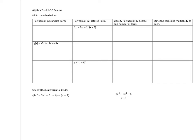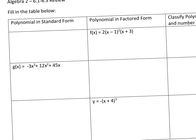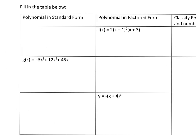You should be able to go back and forth between standard form and factored form. So if you have this polynomial in factored form, what you want to do is expand it by doing the distributive property. First do the exponent part: 2x minus 1, x minus 1, x plus 3. A common mistake is just to write x squared minus 1, but you need to actually write out x minus 1 times x minus 1.